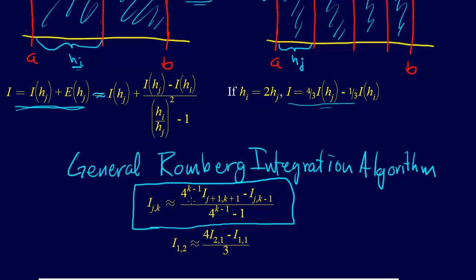So we get i,j,k is approximately equal to 4 to the k minus 1, i sub j plus 1, k minus 1, minus i,j, k minus 1, over 4 to the k minus 1, minus 1. So if we just apply this then back to the situation where we had our step size, it's just 4 times i,2,1, minus i,1,1, over 3. So these are the two interval estimates. So you can see that we've recovered the exact same thing that I showed you here. So this then is the specific case for that.